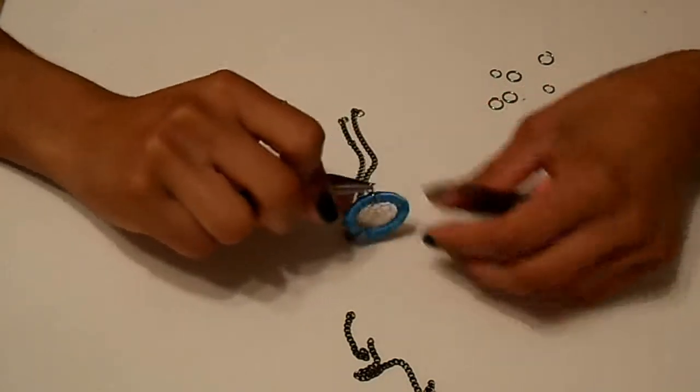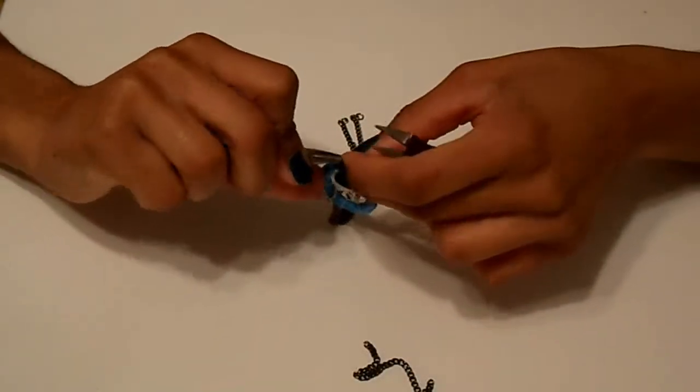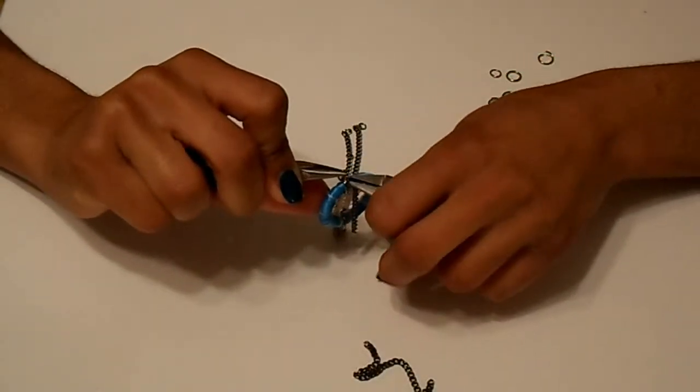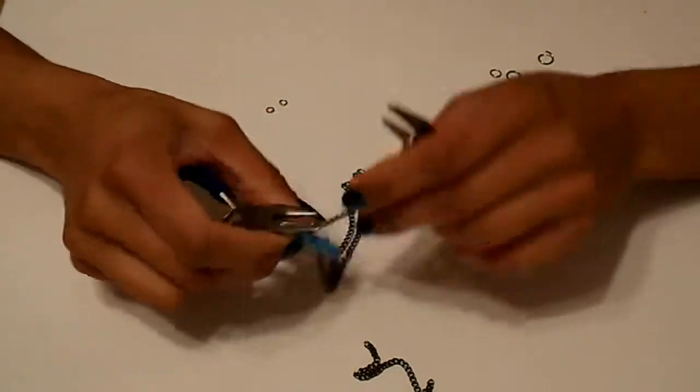Now I will take a smaller piece of chain and connect it to the larger jump ring with another jump ring. And this will connect to the finger piece.